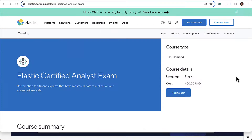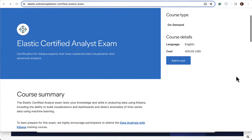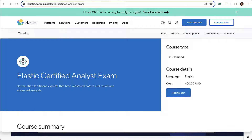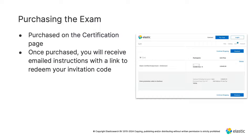Under Elastic Certified Analyst, you can click on 'Get Certified.' On this page you will see the link to add the exam to your cart. Scrolling down, you will find a description of the exam and an overview of what is covered, including the exam objectives. Some objectives include: defining an index pattern, setting the time filter in Kibana, creating area, line, pie, or bar visualizations, defining a metric, gauge, or table using Time Series Visual Builder, creating a dashboard, or running single metric, multi-metric, or population metric machine learning jobs. Once ready, you can purchase the exam. You will need an account with elastic.co to check out. Once purchased, you will receive an email with instructions for how to schedule the exam.